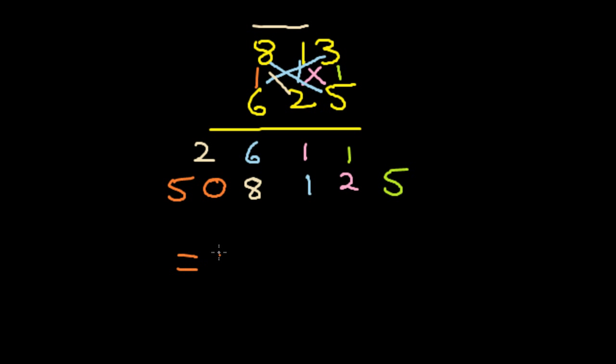So the answer is 508,125. So this is how you perform the general method for multiplication. It's essentially the same. So all you need is more practice. And if you do that, you might just get faster than me.